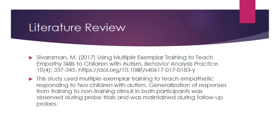In the third journal, the research team used multiple exemplary training to teach empathy skills to children with autism. They helped children identify that different actions or facial expressions can mean the same feeling. For example, clapping hands means you're happy, and smiling means you're happy too. They used multiple exemplary training to teach empathetic responding to two children with autism, and the results were very good.